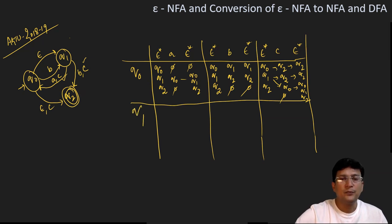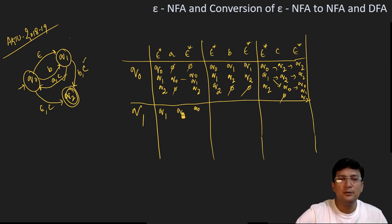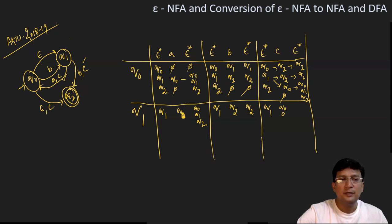Now we'll see the transitions from q1. Epsilon closure of q1 is only {q1} since it can move to only itself. q1 on 'a' moves to q0, and the epsilon closure of q0 is {q0, q1, q2}. Epsilon closure of q1 is {q1}; on getting symbol 'b' from q1, I can move to q2, and the epsilon closure of q2 is {q2}. On getting symbol 'c' from q1, I can move to q0 and also to q2; epsilon closure of q0 is {q0, q1, q2}, and epsilon closure of q2 is {q2}.